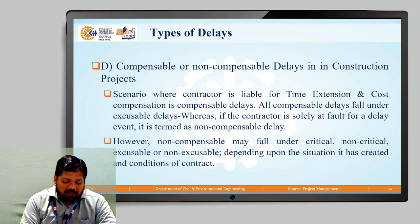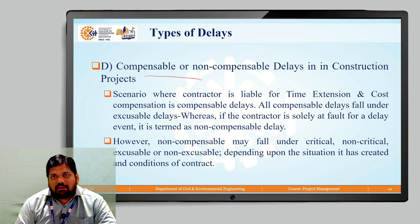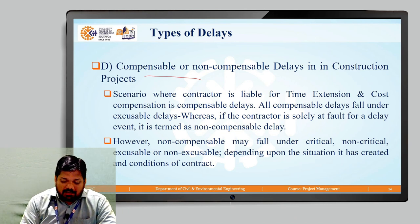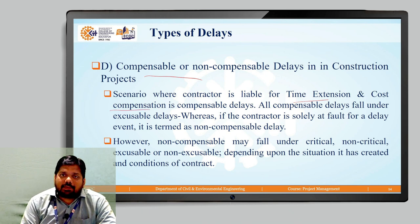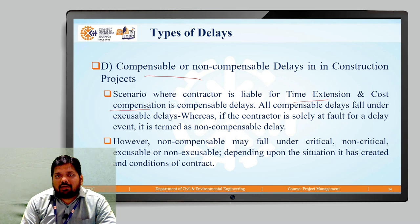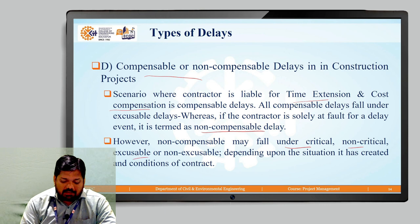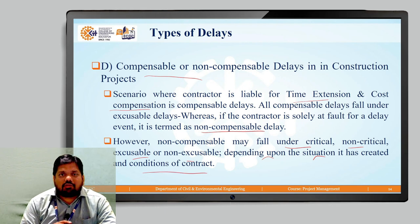The next type is compensable versus non-compensable delays. A scenario where the contractor is entitled to both time extension and cost compensation is called a compensable delay — these fall under excusable delays. If the contractor is solely at fault for the delay event, it is termed a non-compensable delay. Non-compensable delays may fall under critical, non-critical, excusable, or non-excusable categories depending upon the situation and the conditions of the contract.